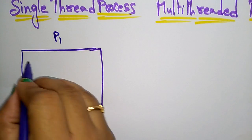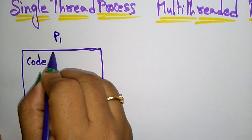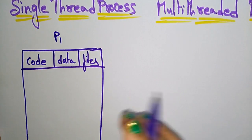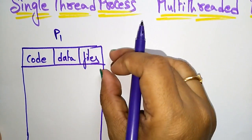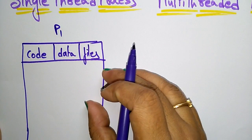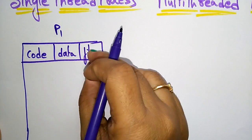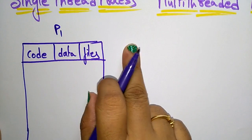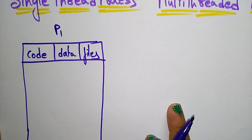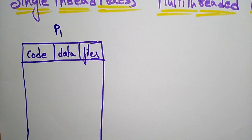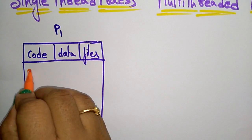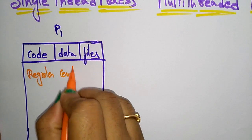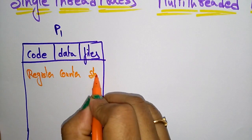In a process, there is a code section, data section, and files section. These — code, data, and files — will be shared by all the threads. Whether it is a single thread or multiple threads, they share the common code, common data, and common files. For a single thread, you have only one register, one program counter, and one stack.